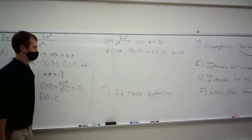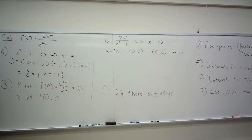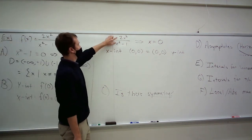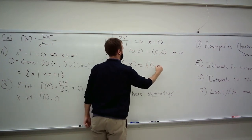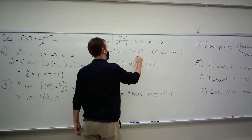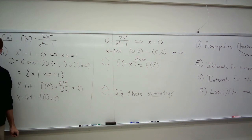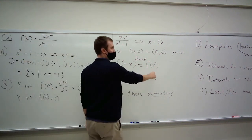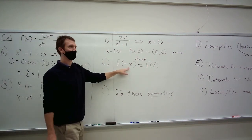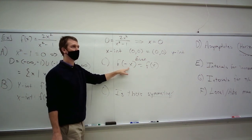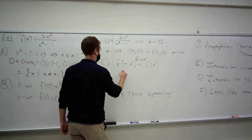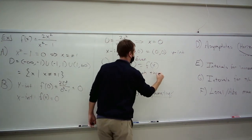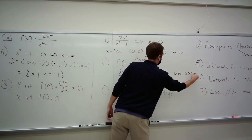Is there any symmetry? If I plug in negative x, I get the same thing in the numerator and the same in the denominator. We call that even symmetry. What does that mean for the graph? We only have to graph half of it — only graph things for positive numbers, because you're going to get the exact same thing for negative numbers. For x equals 1 you get a number; for x equals negative 1 you'll get the exact same number. So this tells us: just graph the right side.